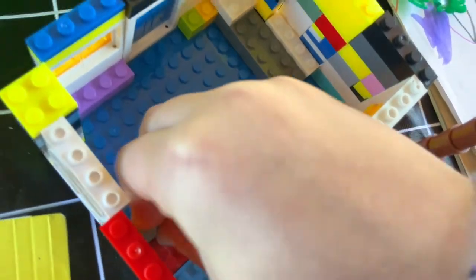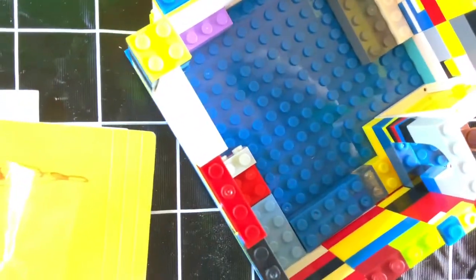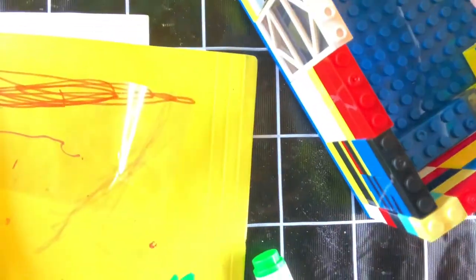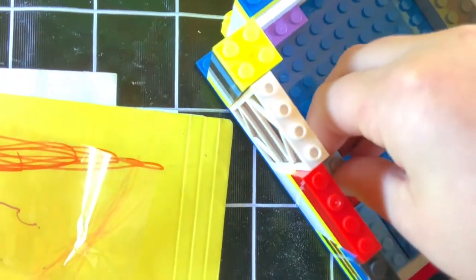And then, if you want to make it just a bit extra fancy, you can take a block like this. I am going to take this blue thing and stick it on the edge, just like that.